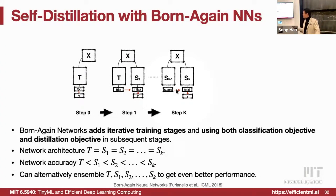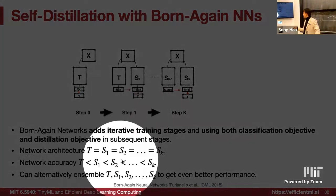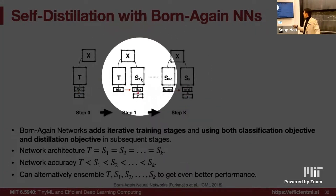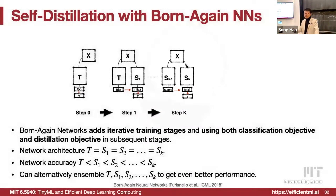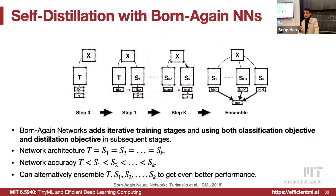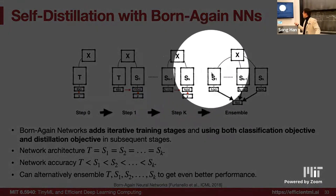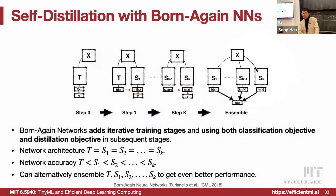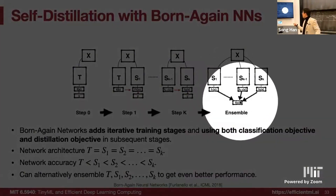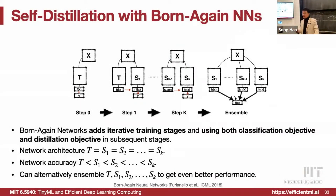In step zero, we train using only the classification cross-entropy loss to train the teacher. In the second step, we use the cross-entropy loss to train the student and also try to match the logits from the previous step's teacher versus the next step's student. Each step, we train with cross-entropy loss plus distillation loss from the previous step. As a result, S1, S2, ..., Sk are getting better and better. When training finishes, since the architectures are the same, we can ensemble the predictions together to get even better final performance.